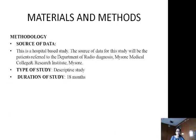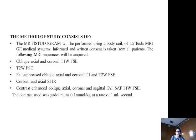Materials and Methods: This is a hospital-based descriptive study. The source of data is patients referred to the Department of Radio Diagnosis, Micromedical College and Research Institute. The duration of the study was 18 months. MR fistulogram was performed using a body coil of a 1.5T MR, GE medical systems. Informed and written consent was taken from all patients. MR sequences acquired included oblique axial and coronal T1-weighted fast spin echo, T2-weighted fast spin echo, fat-suppressed oblique axial and coronal T1 and T2 fast spin echo, and contrast-enhanced oblique axial, coronal, and sagittal fat-suppressed T1-weighted fast spin echo. The contrast used was gadolinium at 0.1 mmol/kg at a rate of 1 ml per second.